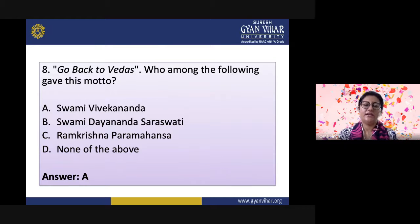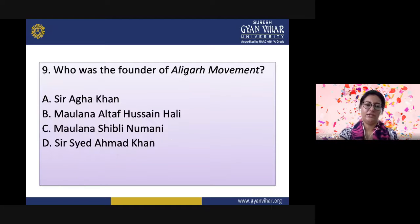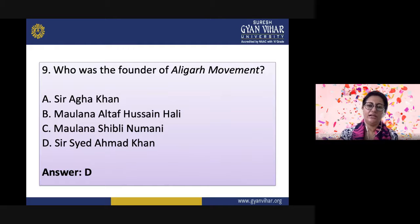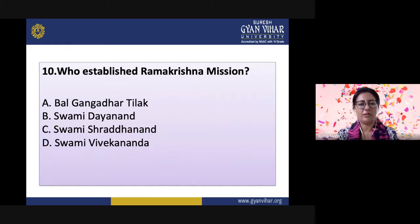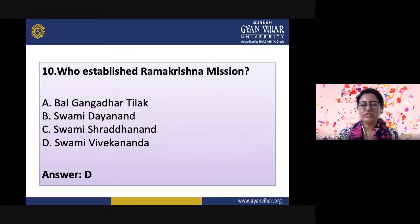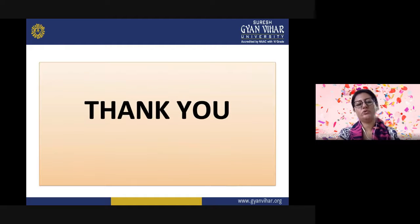Swami Dayanand Saraswati studied the Vedas and the scriptures, and decided that the Vedas needed to be understood by all people in society. Question 9: Who was the founder of the Aligarh movement? Options are: Sir Aga Khan, Maulana Altaf Hussain Hali, Maulana Shibli Nomani, or Sir Syed Ahmed Khan. The correct answer is Sir Syed Ahmed Khan. Question 10: Who established the Ramakrishna Mission? Options are: Bal Gangadhar Tilak, Swami Dayanand, Swami Shraddhanand, or Swami Vivekananda. The correct answer is Swami Vivekananda, who carried out the legacy of Ramakrishna Paramahansa through the Ramakrishna Mission. With this we come to the end of our lesson. Hope you will go through all the slides and the whole video for better understanding. Thank you very much.